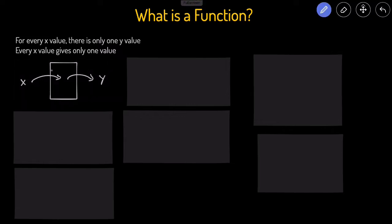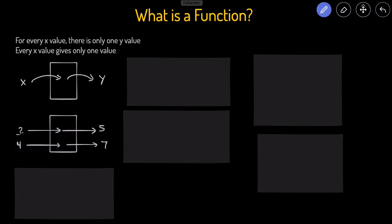For example, this would be a function. If you think of this as our function, this is the input, that's the output. For every x input, there's only one y output. So that is an example of a function. Looking at real numbers, let's say every time we put in x equals 3, we only get y equals 5. And if we put in x equals 4, we get y equals 7. So for every x, we only get one y. That would be a function.